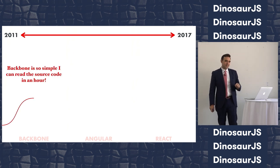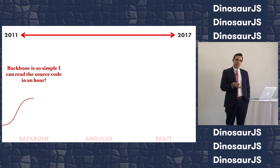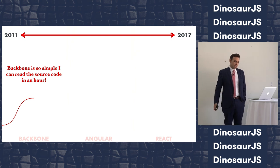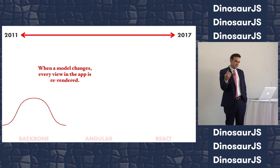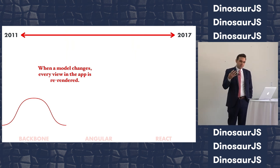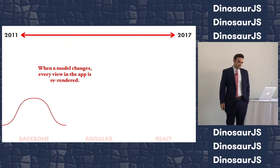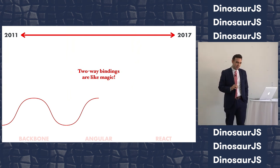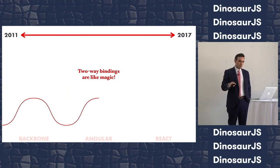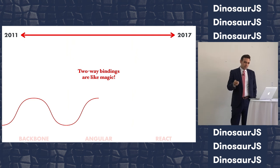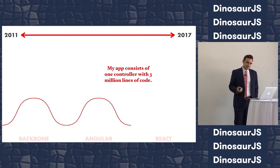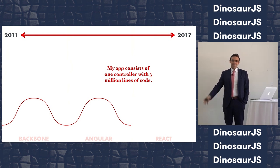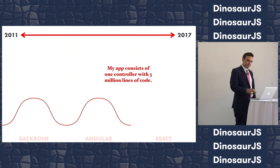In 2011, the cutting edge was Backbone. People would say things like, 'I really love Backbone's simplicity — I can clone the repo, read the source code, and understand it all in an hour.' But after building a big enough app, it would get slower and slower. They'd discover that just one model changing caused the entire app to re-render, and worse, no one on the team understood how the app works. Then Angular came along — unlike Backbone where you manually re-render view hierarchies, Angular is super simple because you just set a property on your scope and it updates the DOM automatically. But after building a big enough app, you discover the entire thing is a single controller with three million lines of code, and each time Angular has to dirty check, it takes five minutes. And no one understands how the app works.